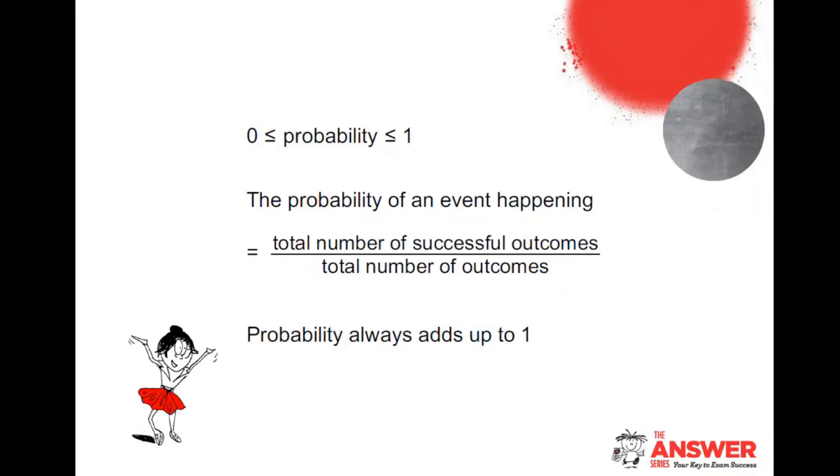For those of you who were on just before we started formally, that question with the squares where you had to get the probability that the two squares shaded were not next to each other or touching, you definitely need to think of this formula as you're doing that. And we will discuss it in the webinar. Probabilities always add up to one, which will also come up as we go.